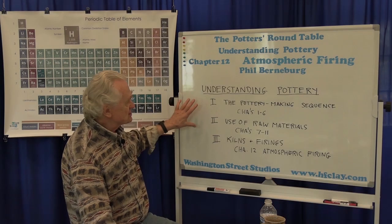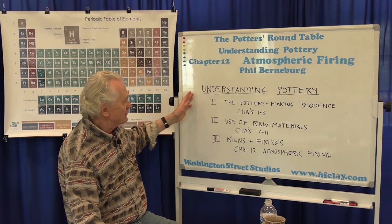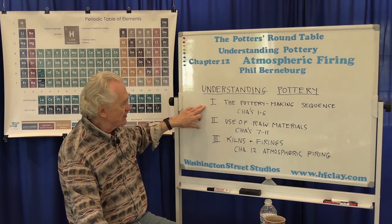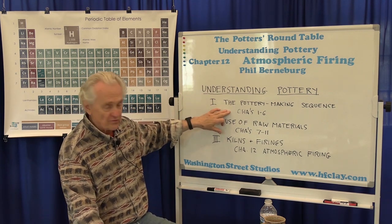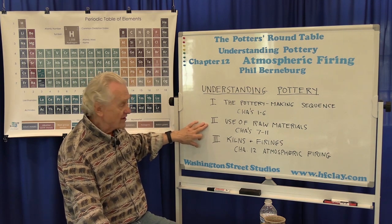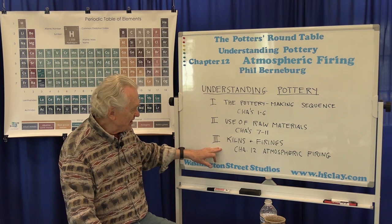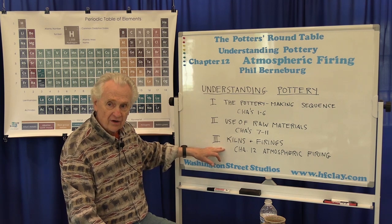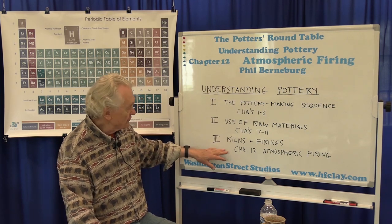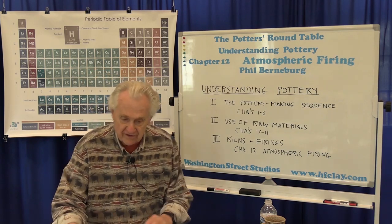Just to catch up a little bit on where we are in our overall program of Understanding Pottery: we've talked about the pottery making sequence, that was chapters 1 through 6. We talked about the use of raw materials, that was chapters 7 through 11. So we're starting the third section in our topics, which are kilns and firings, and we're starting off with chapter 12, atmospheric firing.